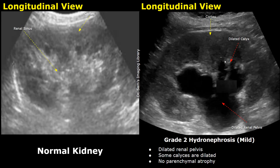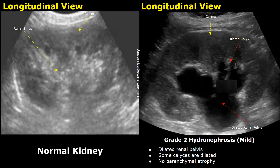In this image of grade 2 hydronephrosis, the calyces in the lower pole of the kidney are dilated, but the calyces in the upper pole appear normal. So some calyces are dilated and the renal pelvis is dilated — this is a grade 2 hydronephrosis. The renal cortex is normal in thickness.